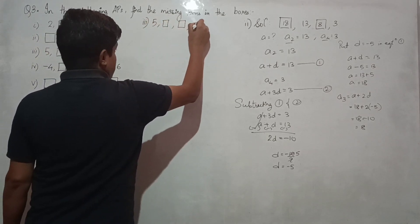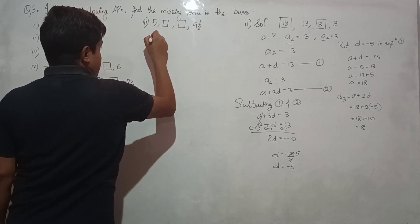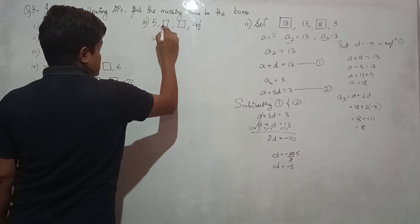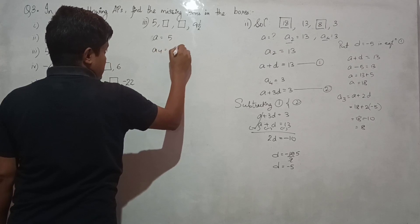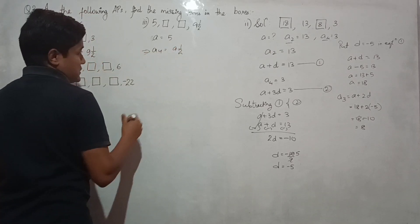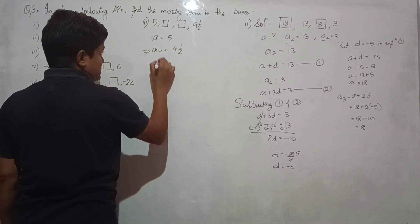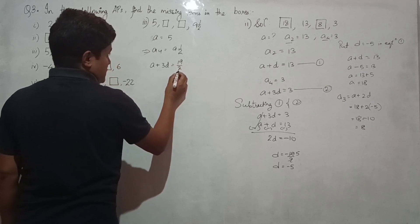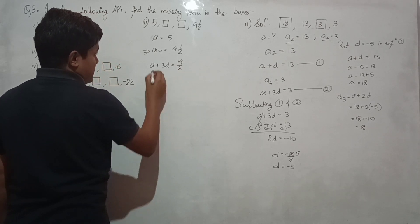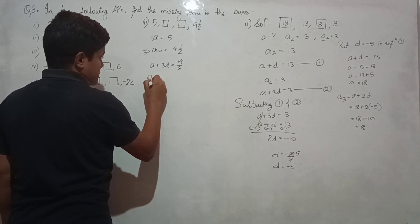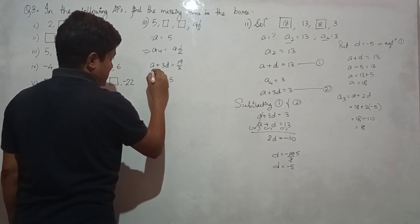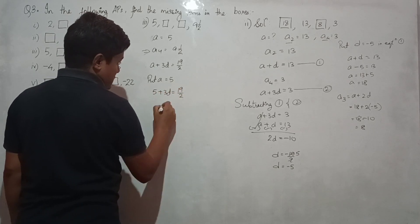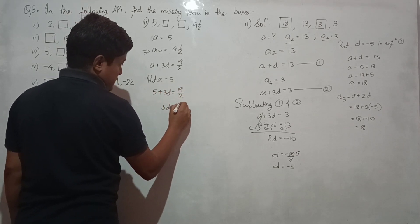The sequence is 5, box, box, 9½. First term is 5 and the fourth term is 9½, which is 19 by 2. Putting the formula: a plus (4 minus 1)d equals 19 by 2. Since a equals 5, we have 5 plus 3d equals 19 by 2.